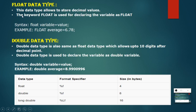Coming to the float data type — float will accept decimal values and we use float as a keyword. The syntax is: float space variable = value. For example, float average = 6.78.